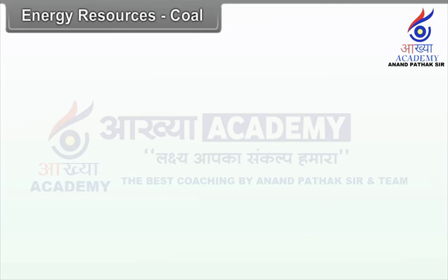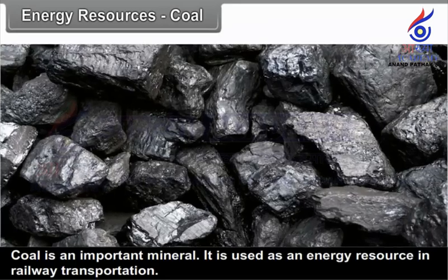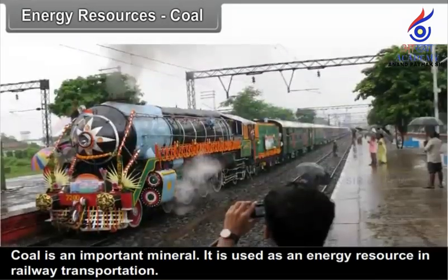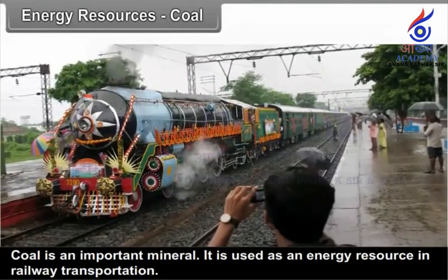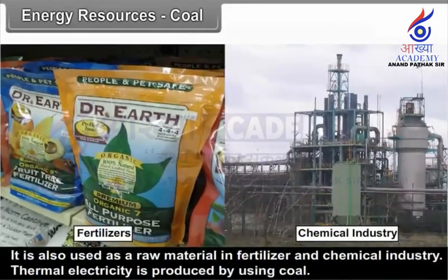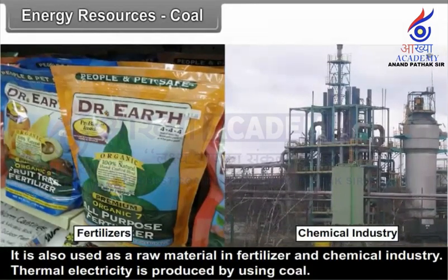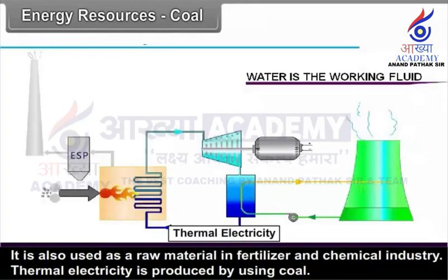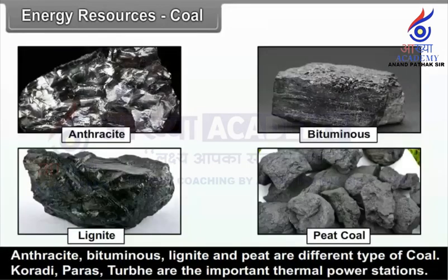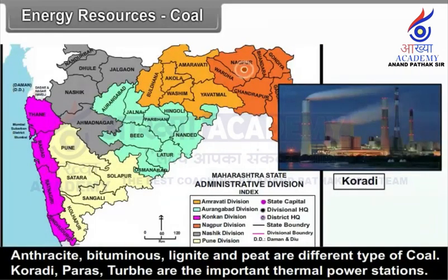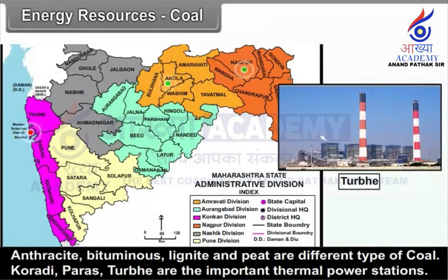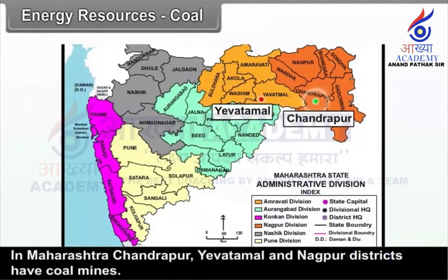Energy Resources — Coal. Coal is an important mineral used as an energy resource in railway transportation and as a raw material in fertilizer and chemical industries. Thermal electricity is produced by using coal. Anthracite, bituminous, lignite and peat are the different types of coal. Koradi, Paras, and Turbe are important thermal power stations. In Maharashtra, Chandrapur, Yavatmal, and Nagpur districts have coal mines.